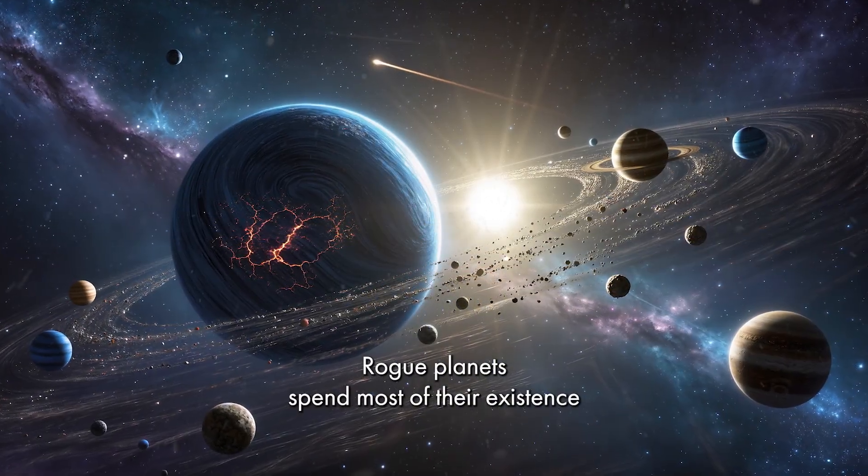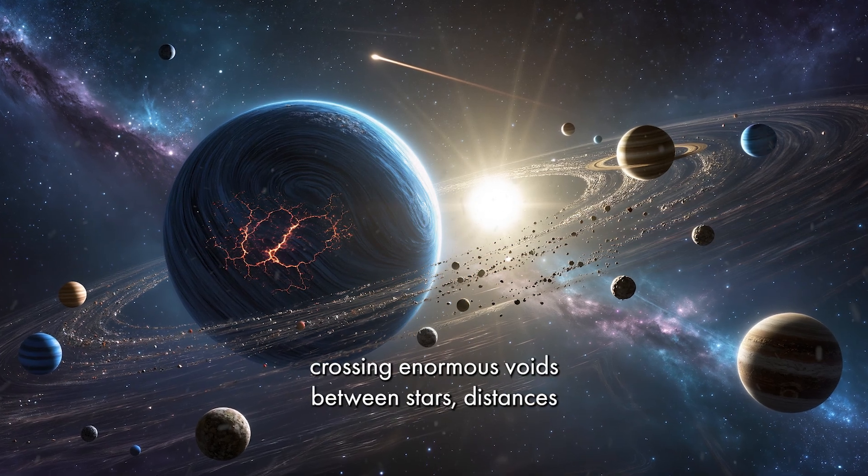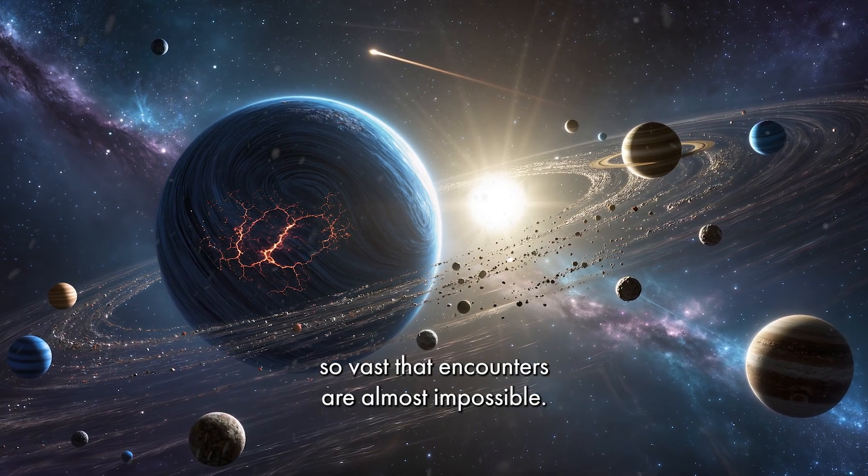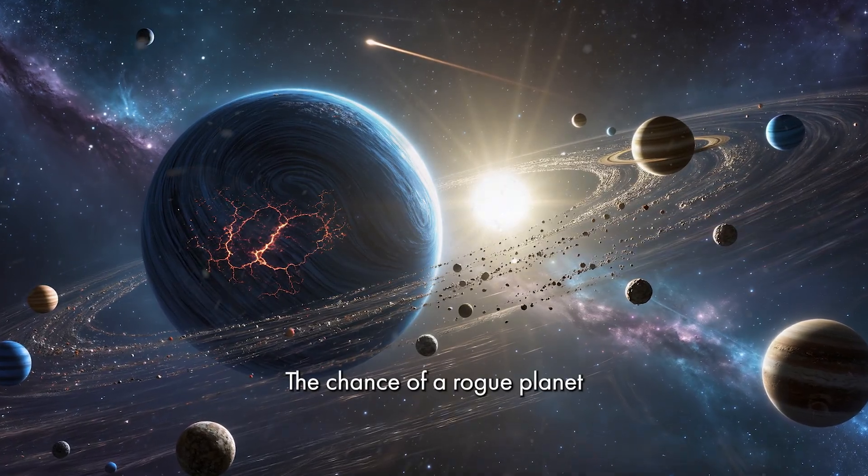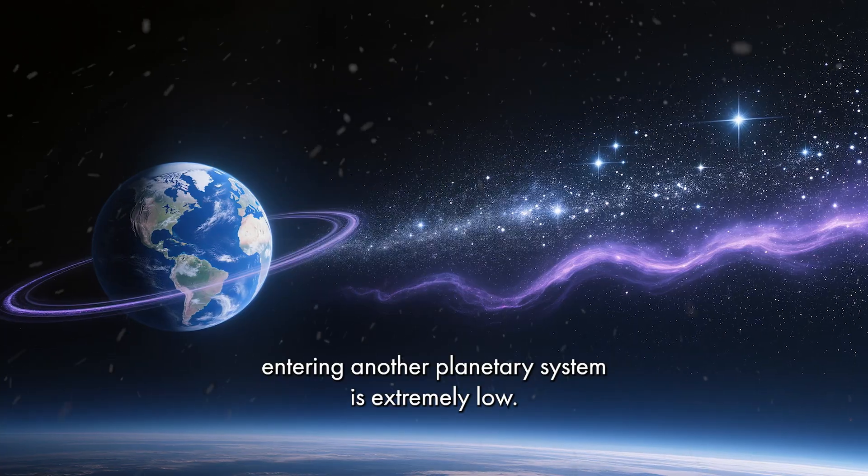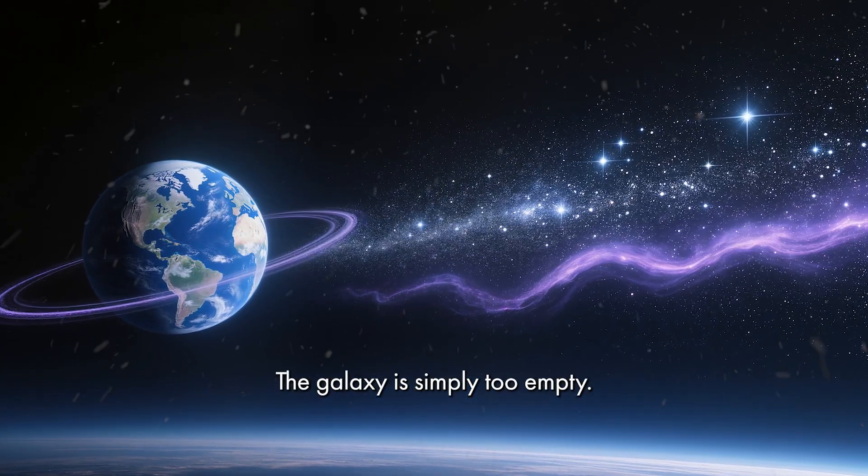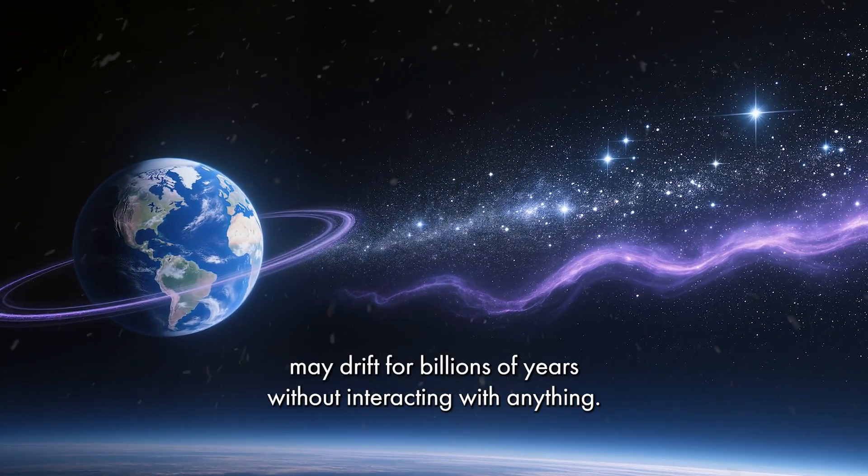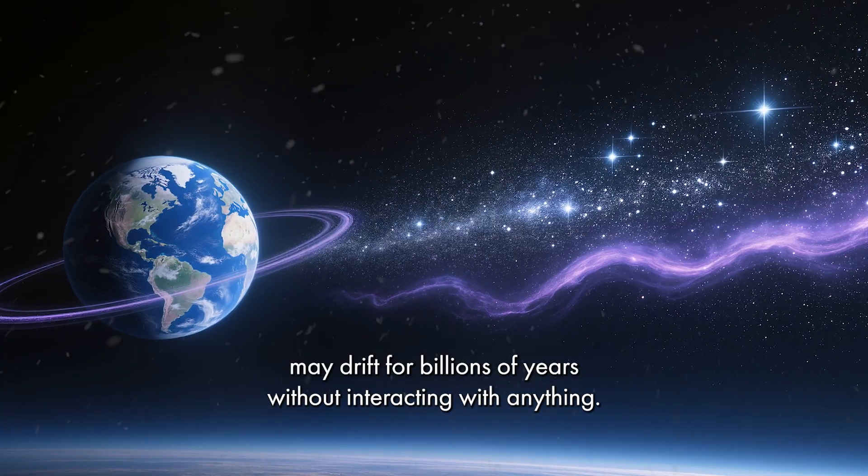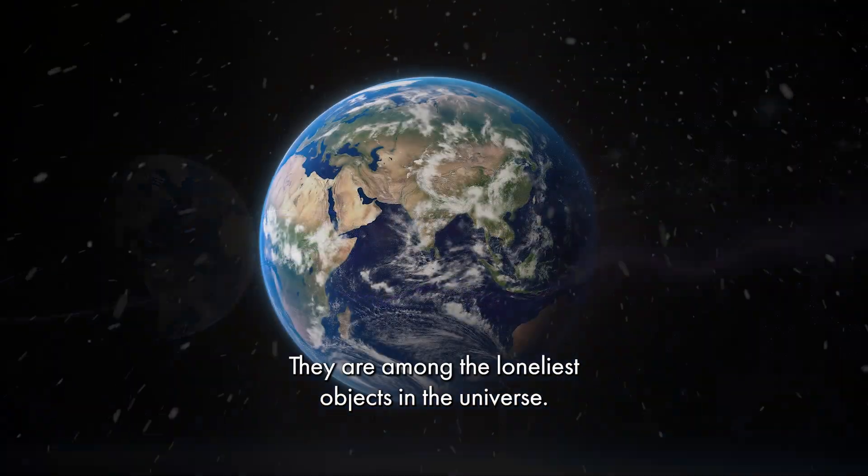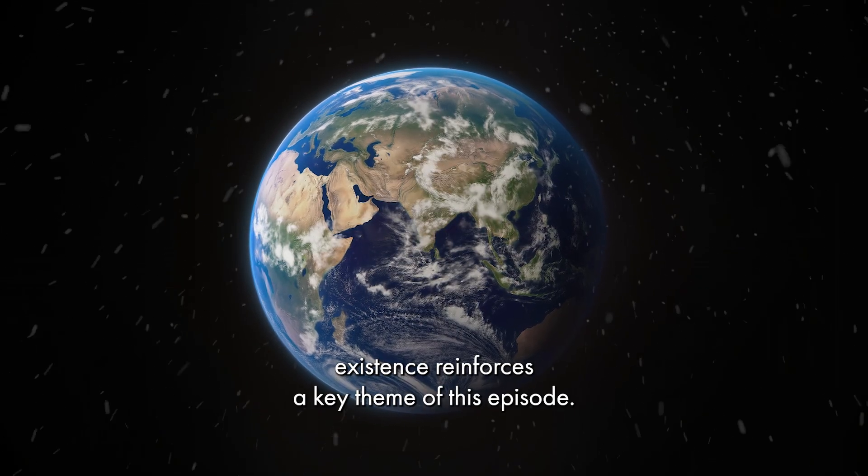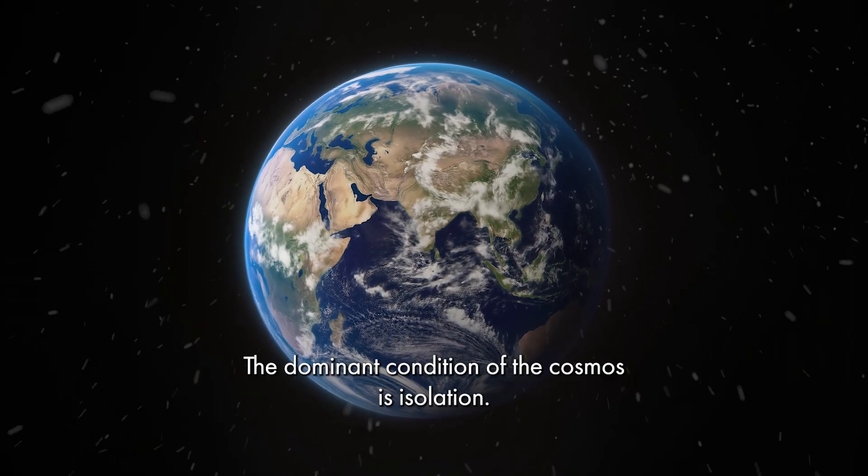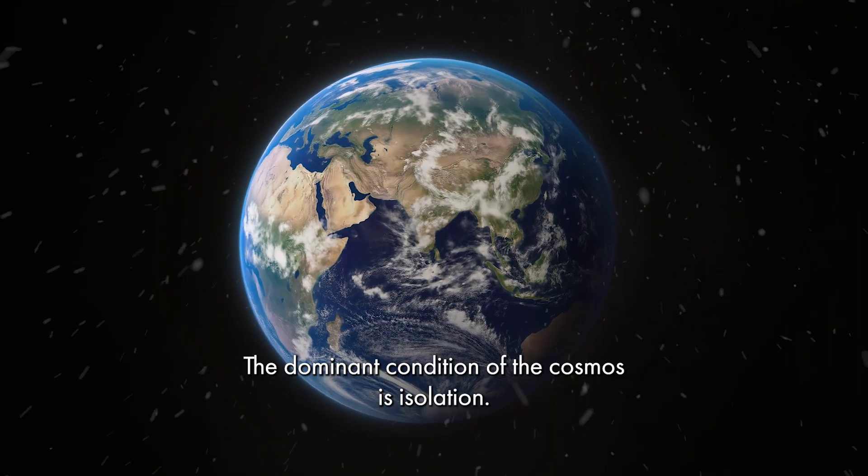Rogue planets spend most of their existence crossing enormous voids between stars. Distances so vast that encounters are almost impossible. The chance of a rogue planet entering another planetary system is extremely low. The galaxy is simply too empty. These planets may drift for billions of years without interacting with anything. They are among the loneliest objects in the universe. Their existence reinforces a key theme of this episode. The dominant condition of the cosmos is isolation.